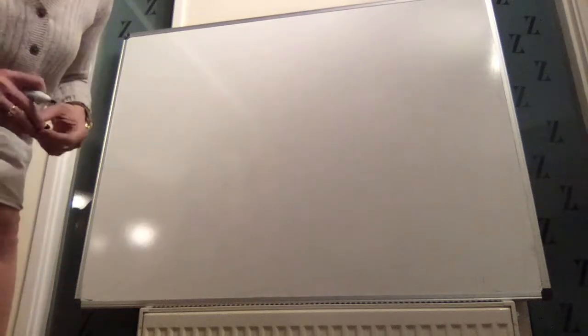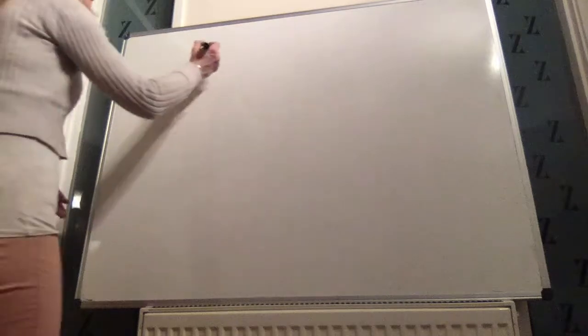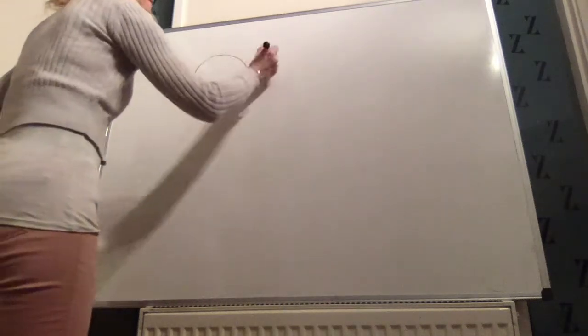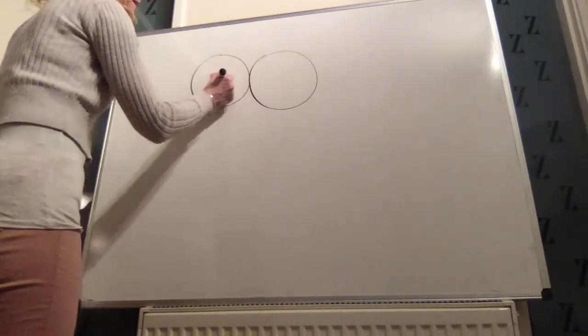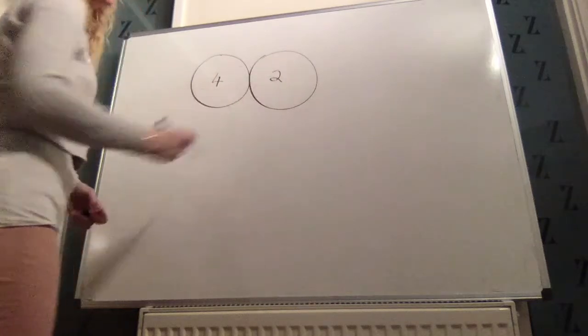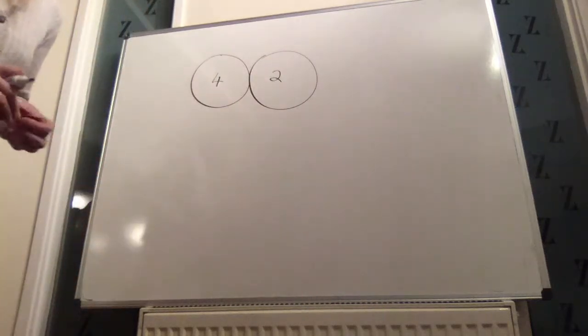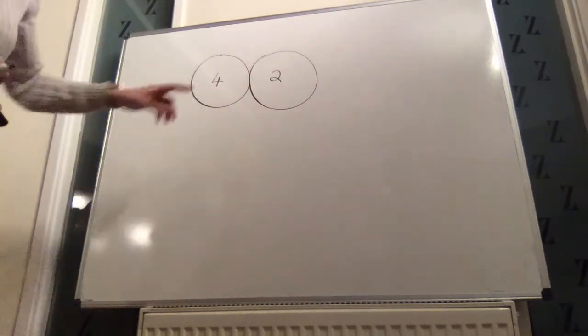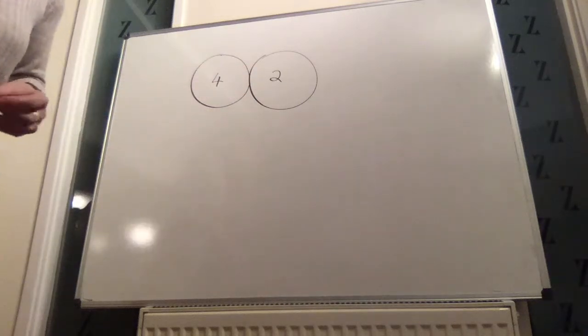So this is question 9 on page 120. Two spheres collide obliquely. The mass of the first one is, sorry, the first one is 4 and the second one is 2.